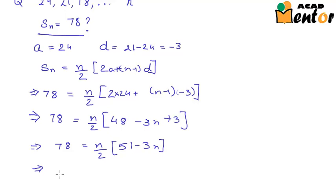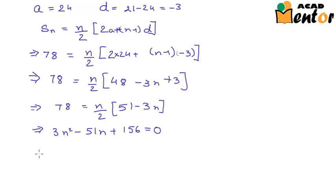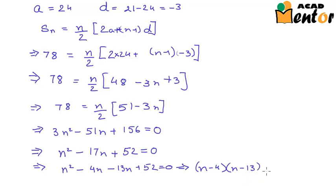On solving further, we get 3n square minus 51n plus 156 is equal to 0. Now this is a quadratic equation and we can solve this by splitting the middle term. First we will reduce this to get n square minus 17n plus 52 equal to 0. Now splitting the middle term we get n square minus 4n minus 13n plus 52 equals 0. This implies n minus 4 into n minus 13 equal to 0. This means n is either 4 or n is 13.